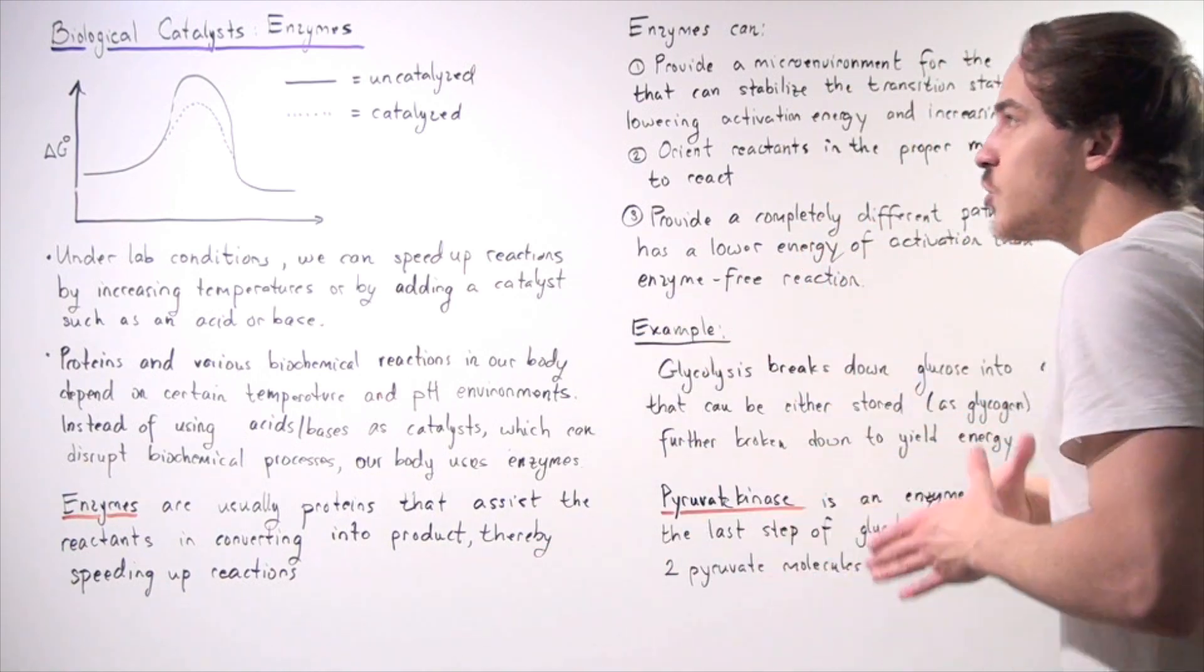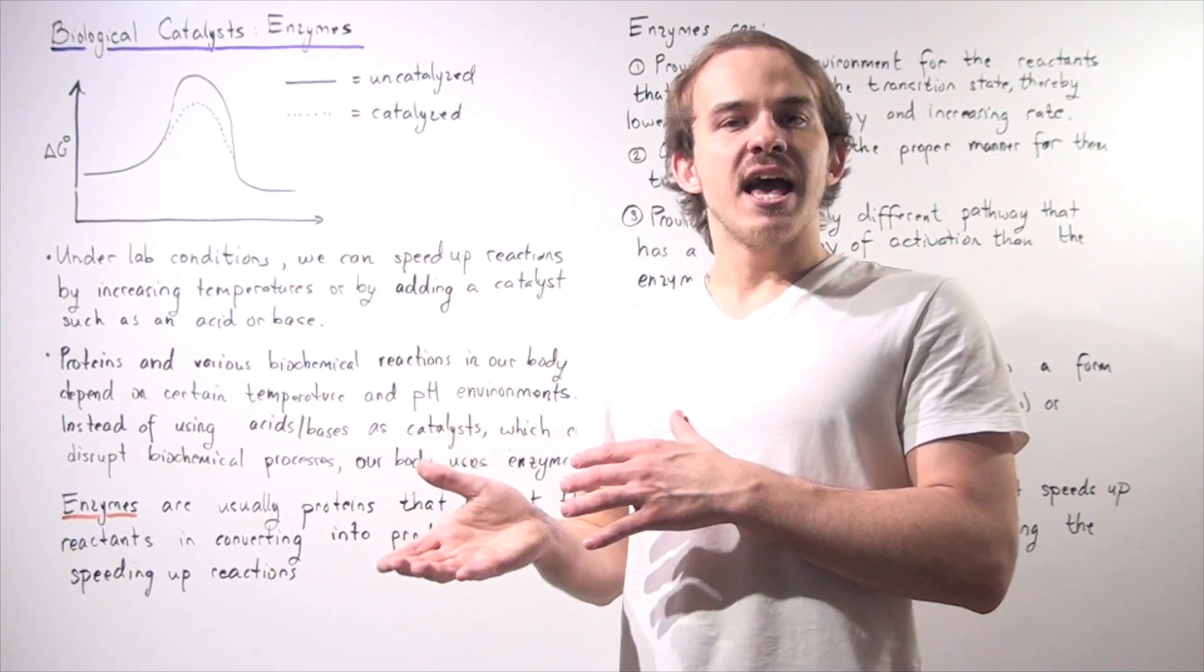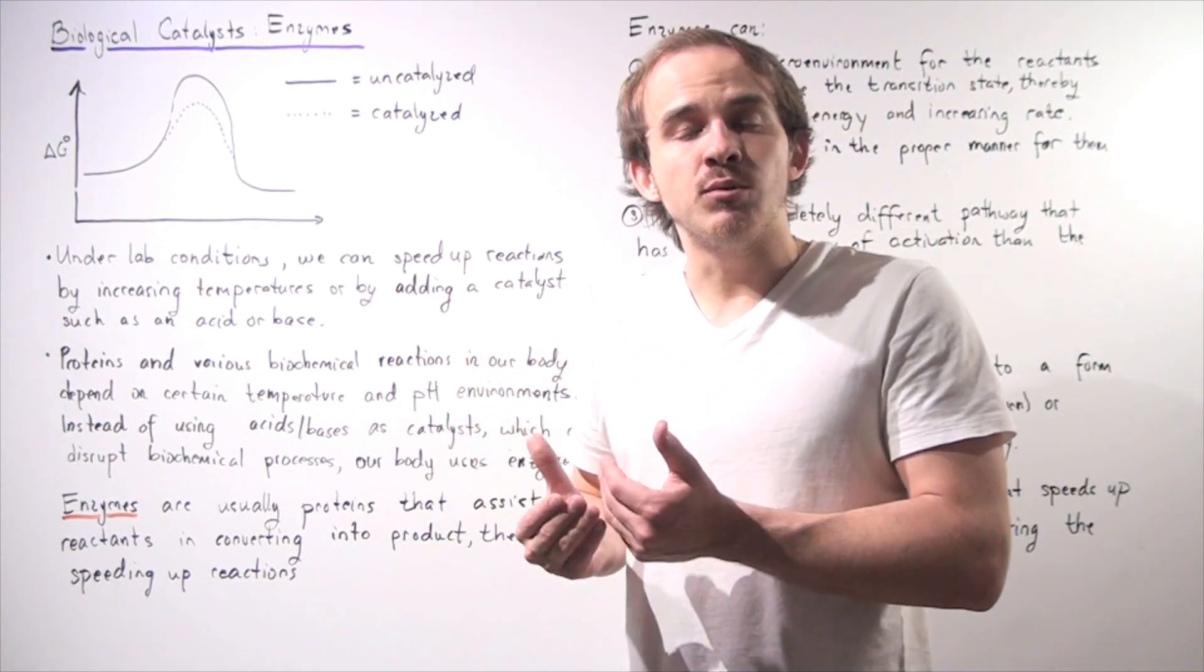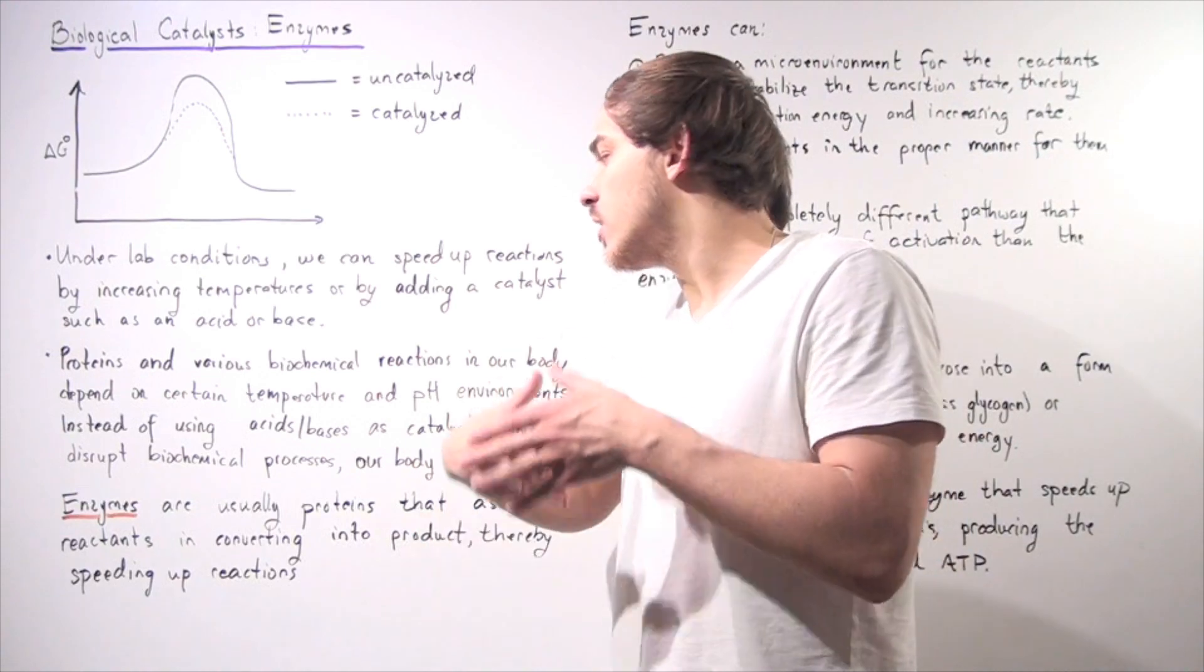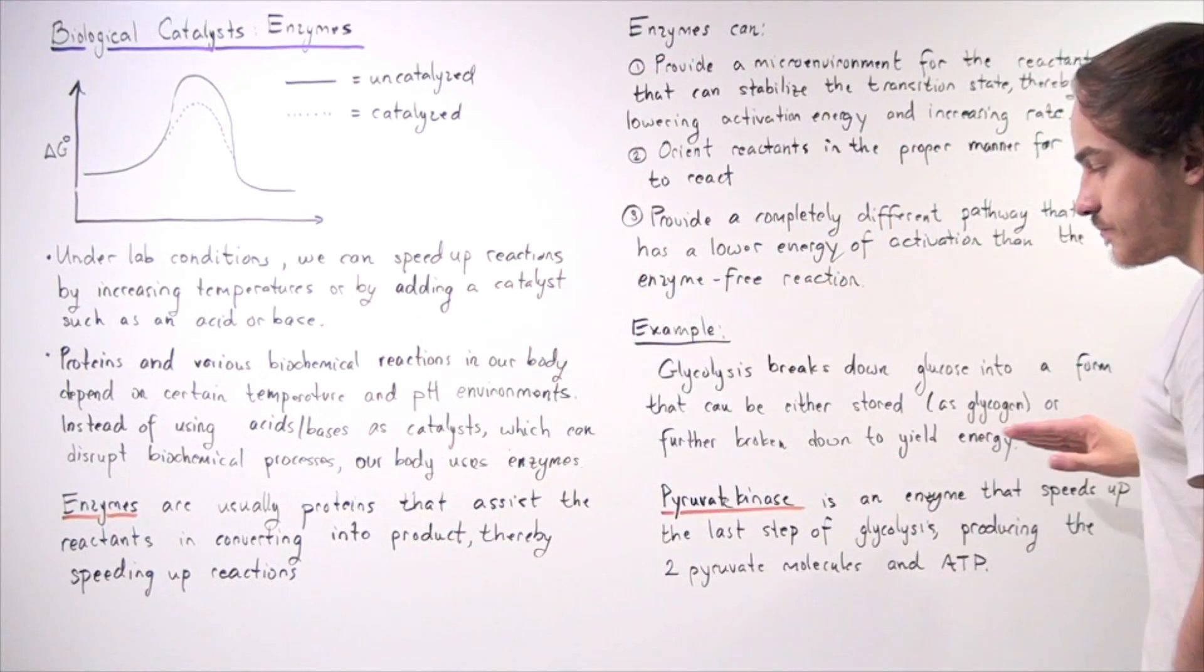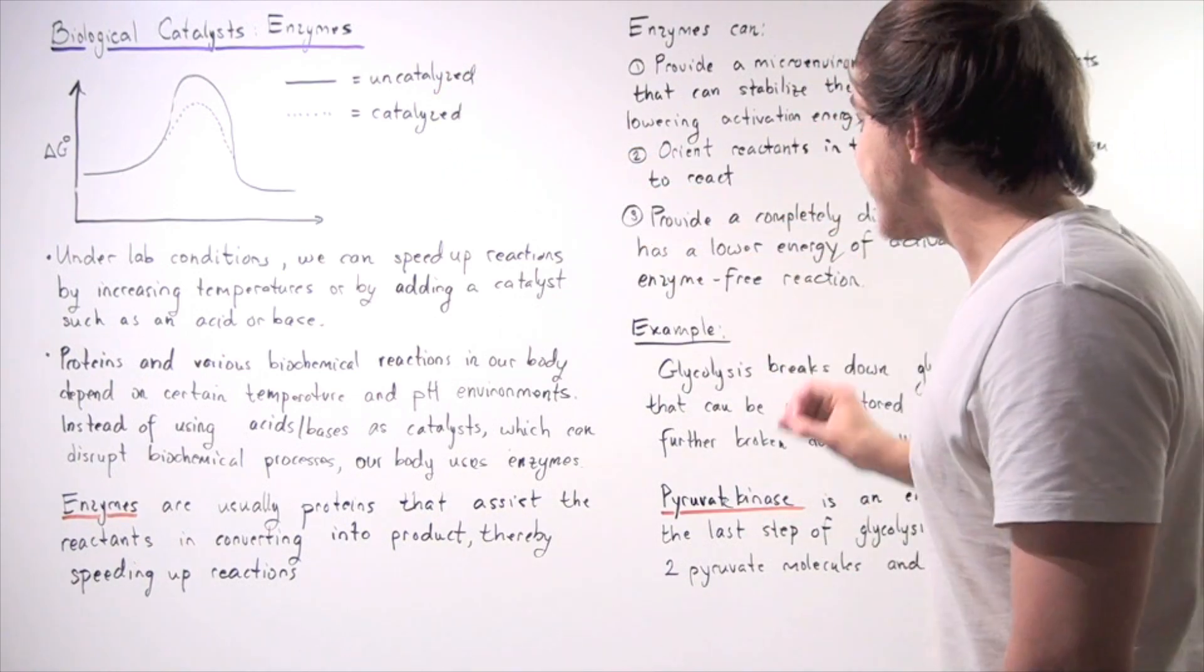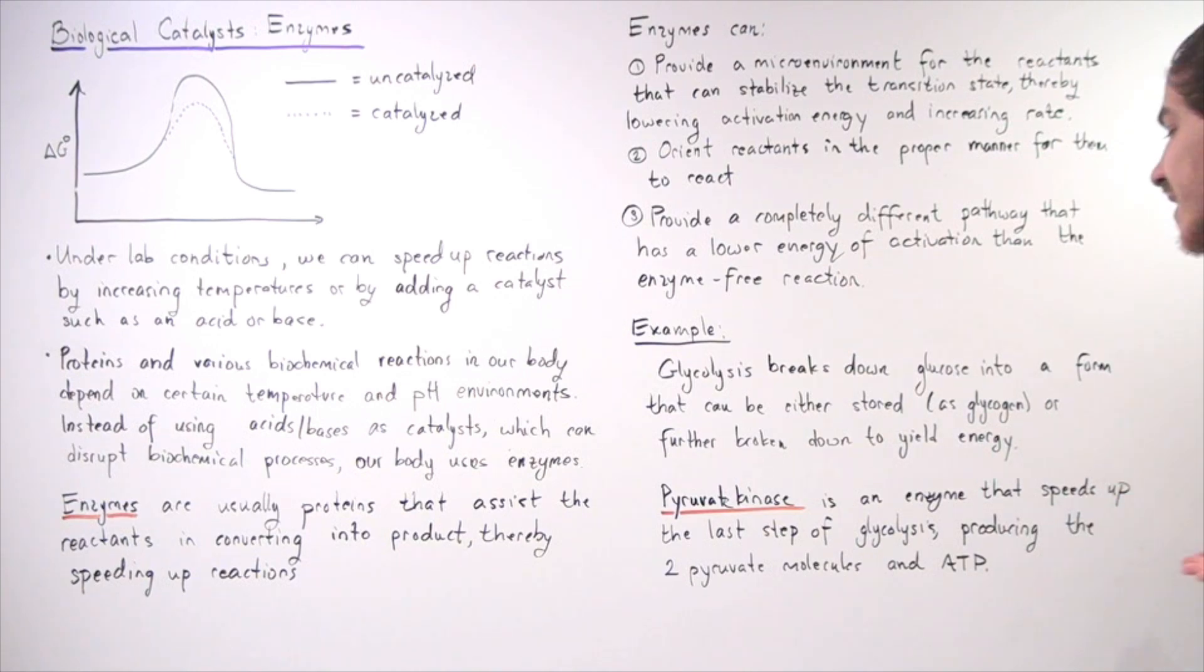This process of glucose requires different types of enzymes to take place at a very high rate. Without these enzymes, we would probably die. We would not be able to create the amount of energy required for life. Pyruvic kinase is a specific example of an enzyme that is used by this glycolysis process. This enzyme speeds up the last step of our glycolysis process, producing the two pyruvic molecules and ATP.